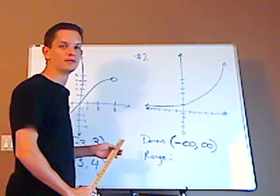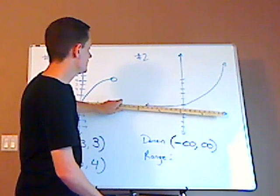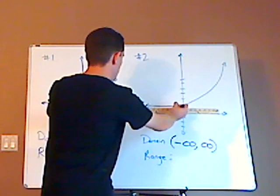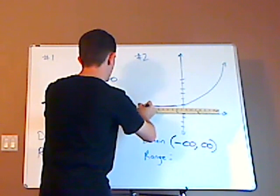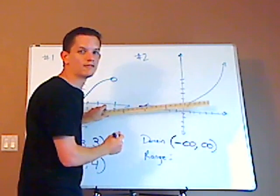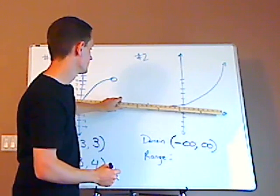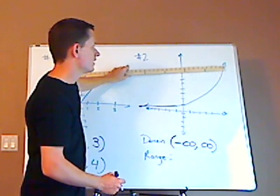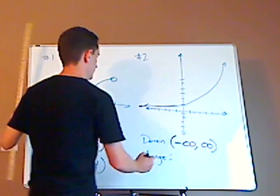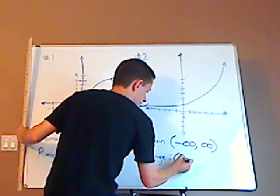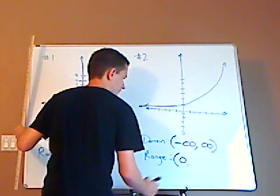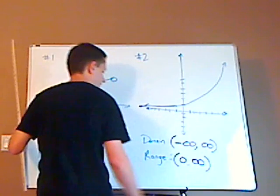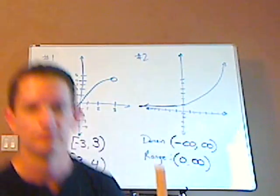Now, notice what's happening with the range. It's really close to 0 but does not include 0 — the curve goes down and down but never touches the x-axis. So it's 0, and then it goes up to positive infinity. You're not going to include the 0, so that would be parentheses, and then it goes up to positive infinity. And that's it.